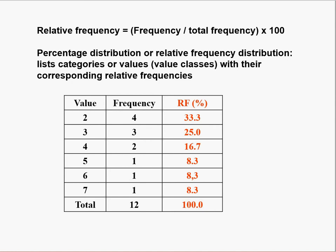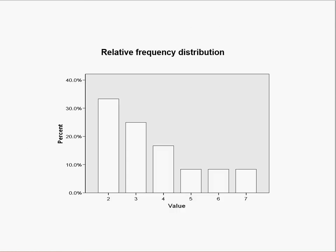We can also calculate the relative frequency and put it in a table. Relative frequency is calculated by dividing the frequency by the total frequency times 100. For example, the frequency 4 for value 2, divided by the total frequency 12, gives 33.3%. This gives us a sense that value 2 accounted for a third of all cases in the variable, making it very important.